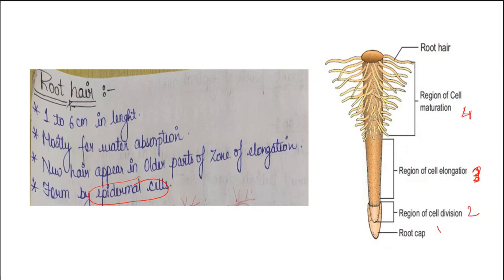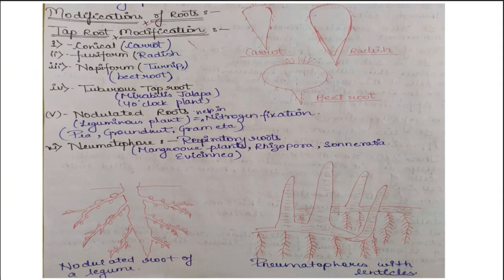Keep this diagram in mind. Now let us understand the different modifications of root. There are different types of roots modified for different functions — food storage, respiration, nitrogen fixation, and other modifications seen in roots.